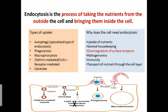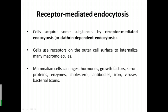Cells acquire substances by receptor-mediated endocytosis, or clathrin-dependent endocytosis. This receptor-mediated endocytosis is more specific towards specific proteins. The cells will use receptors on the outer cell surface to internalize many macromolecules. Mammalian cells can ingest hormones, growth factors, serum proteins, enzymes, cholesterol, antibodies, and so on.